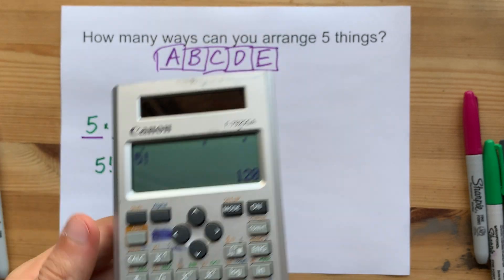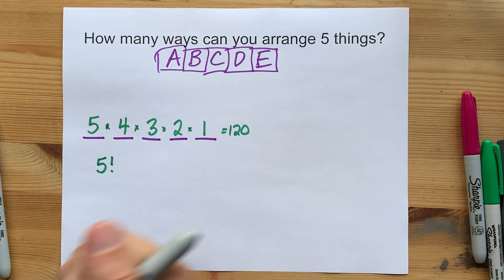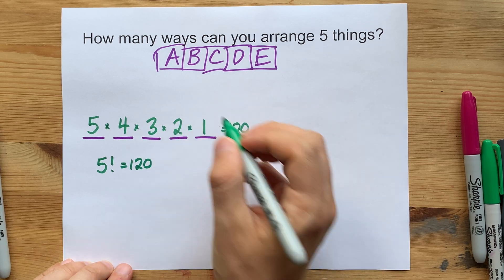It takes five and multiplies it by everything else that's lower than five down to one. Five, four, three, two, one. Nice. So, you can also use this factorial method, but it's the same thing.